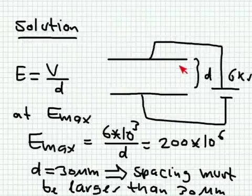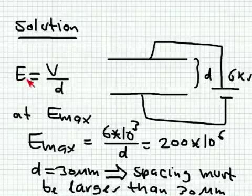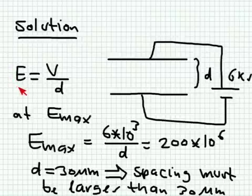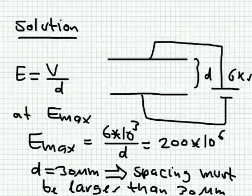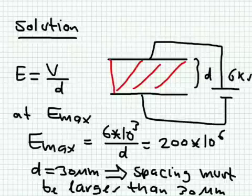We assume the field is uniform with no fringing field, so the electric field between the two blades equals V over d, where d is the separation. We don't want the electric field to exceed the maximum electric field; otherwise, the mica filling inside would break down. There is a mica filling between the blades — it's not air.